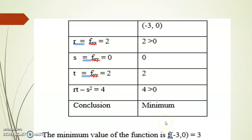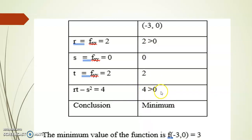We construct a table for the stationary point (-3, 0) with r = 2, s = 0, t = 2. The delta value rt - s² = 2×2 - 0 = 4, which is greater than 0. So the point is either a maximum or a minimum. Since r = 2 > 0, the point is a minimum. The minimum value of the function is found by substituting x = -3, y = 0 into f(x,y).